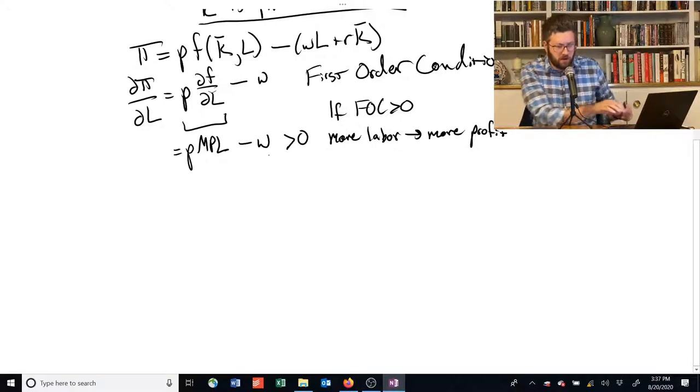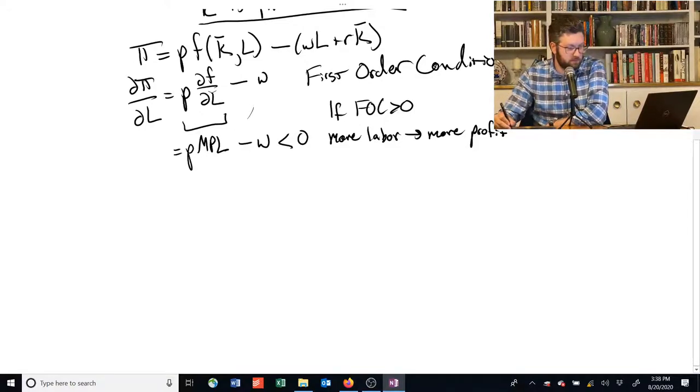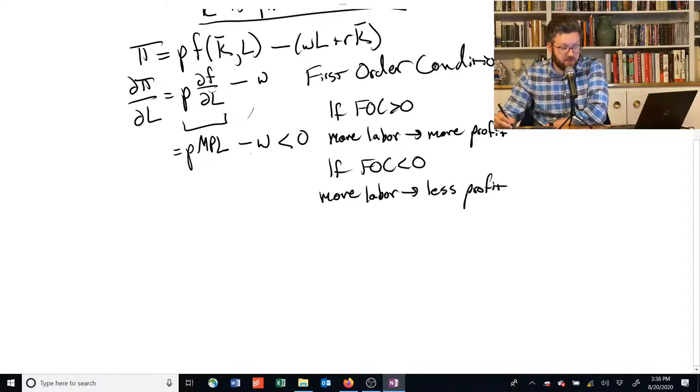We can also have this be negative. If that's the case, more labor leads to less profit. In that case, we've got this W, which is greater than this. So we have some extra sales, but the amount of extra sales we get is less than the extra wage rate. And so if this thing is negative, it's telling us that we don't want to hire any more labor because it's going to reduce our profits. And in fact, we want to reduce our labor because if the first order condition is negative, that also says that if you reduce L, you increase profit.